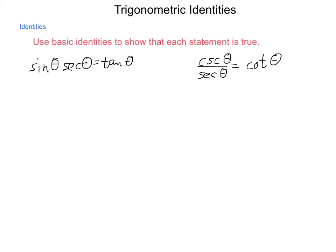Sine of theta is the same as one divided by the cosecant of theta. Cotangent of theta is one divided by the tangent of theta. Using these basic identities, we need to show that the statements below are true. So, sine of theta times secant of theta is equal to tangent of theta.